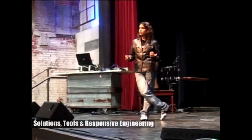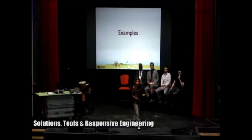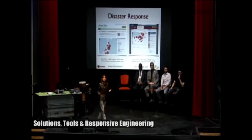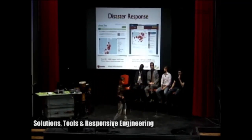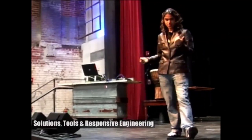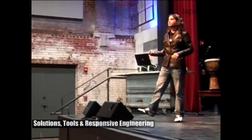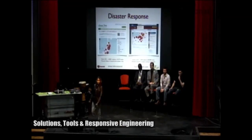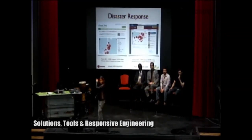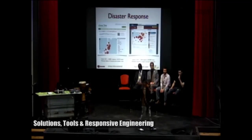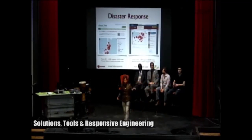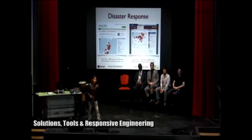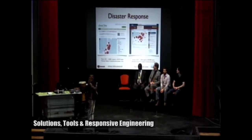Ushahidi has been used in disaster response. March 2011 — what happened in Japan? The Japanese took Ushahidi, took the core platform — the Ushahidi team didn't even know; we knew only a few hours before. They translated the whole platform and rolled it out. There were 4,000 reports and about 140,000 plus views. You could actually tell which areas along Japan were under threat. You could actually monitor the tsunami intensity in the different areas.